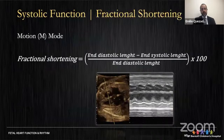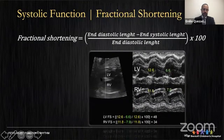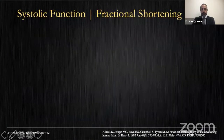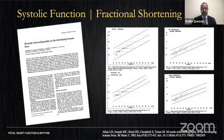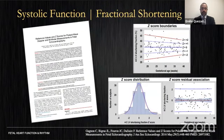Fractional shortening is obtained using motion or M-mode and calculated with a standard formula. The M-mode line must be perpendicular to the ventricular septum and always obtained in an adequate four-chamber view. Here we see measurement of fractional shortening in both the left and right ventricles. Normal values in human fetuses were determined almost three decades ago.